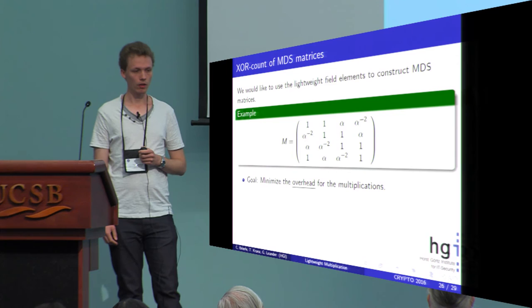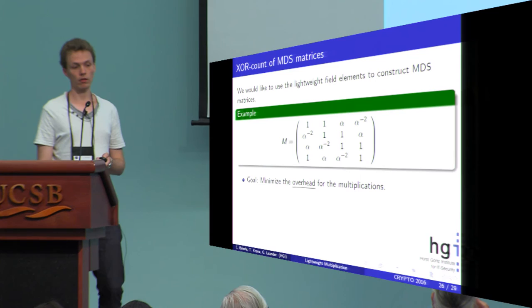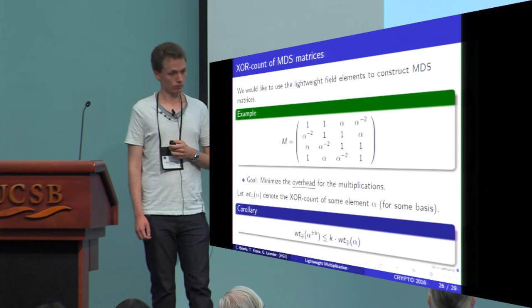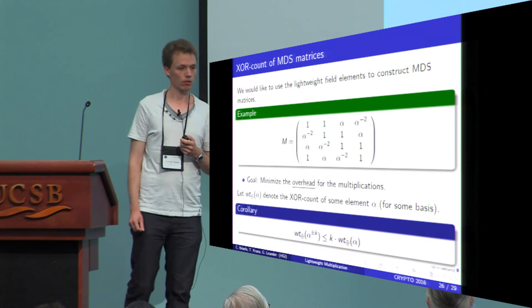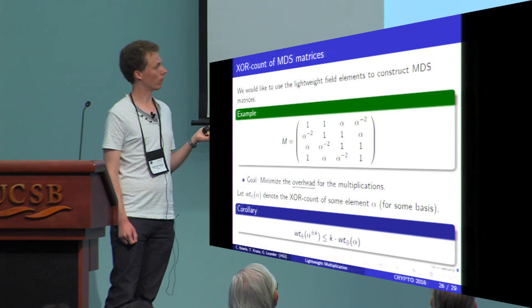Our goal is to minimize the overhead for the multiplications. Why? Because you always have a static part for summing up the exponentiation results and what you can optimize is the overhead for these multiplications here. We concentrate on circulant matrices here with the powers of an element alpha. If we denote the XOR count of some element by this weight XOR symbol, then if we want to compute the XOR count of alpha to the power ±K, you can see that this is bounded by K times the XOR count of alpha.